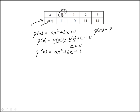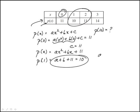We need two more equations that we can get from here. p of 1 would be a plus b plus 11, which is equal to 10. So the first equation we have is a plus b equals minus 1.